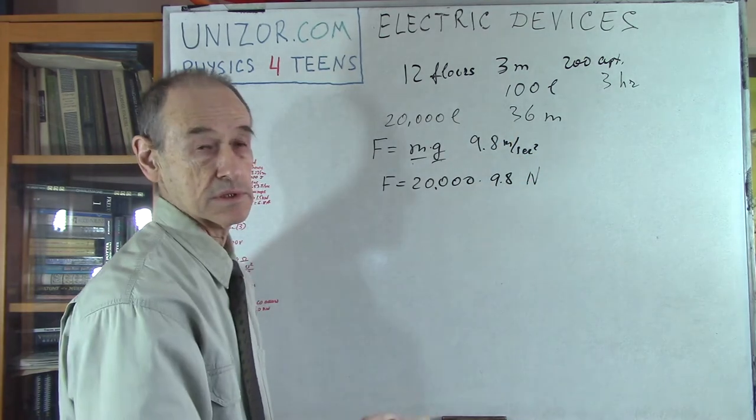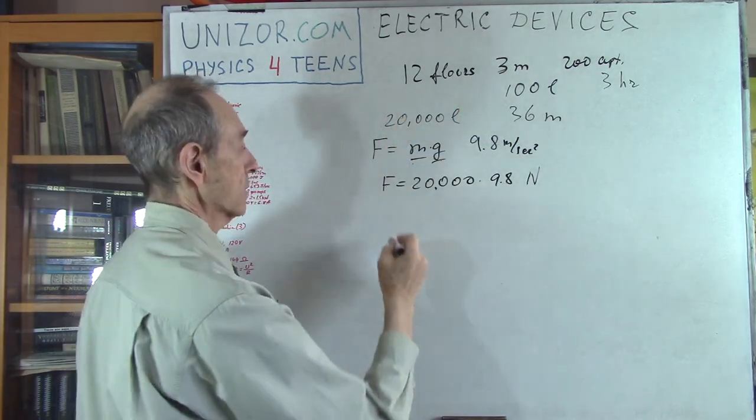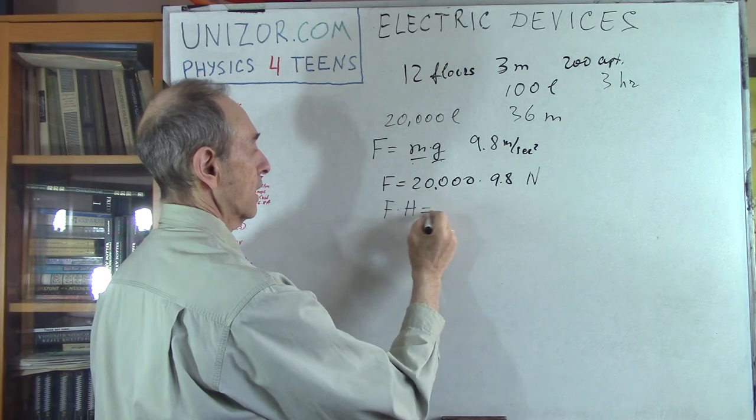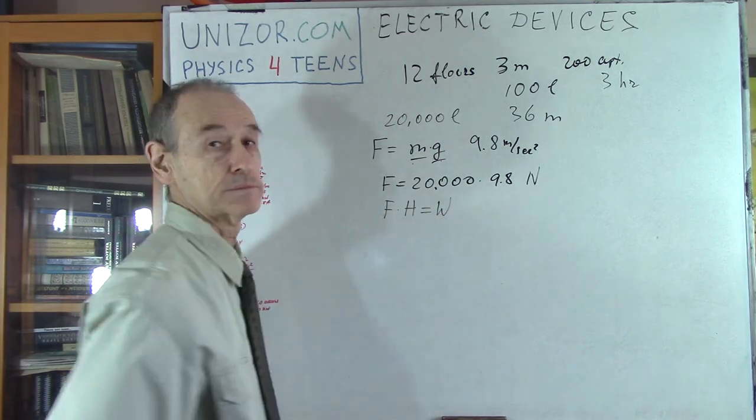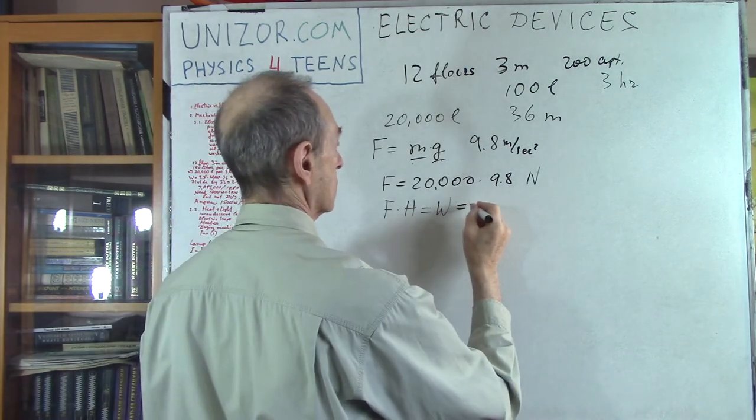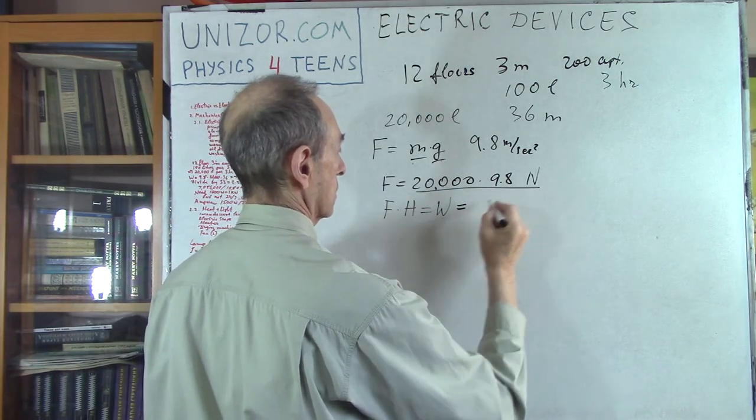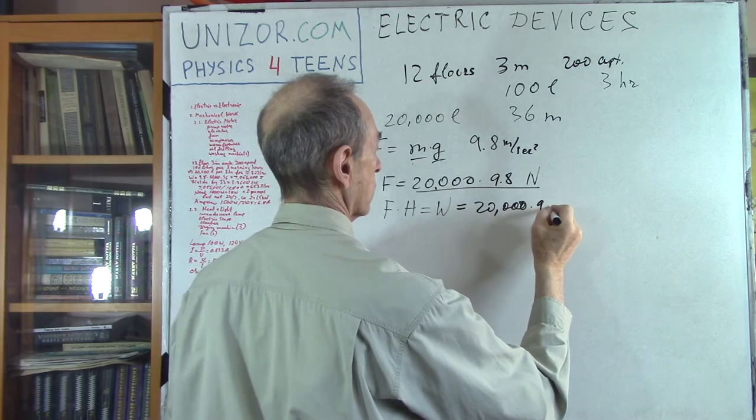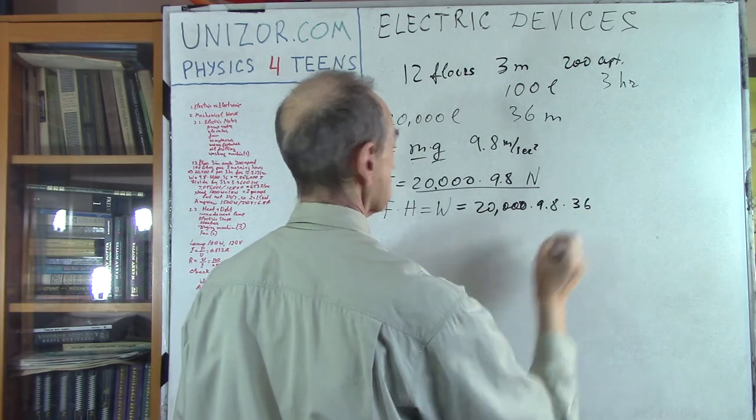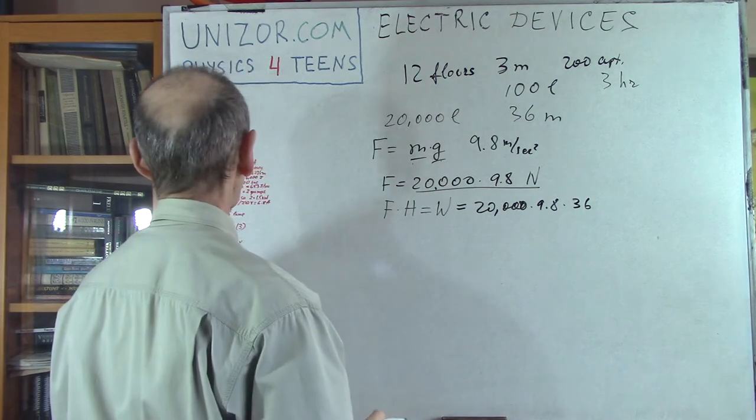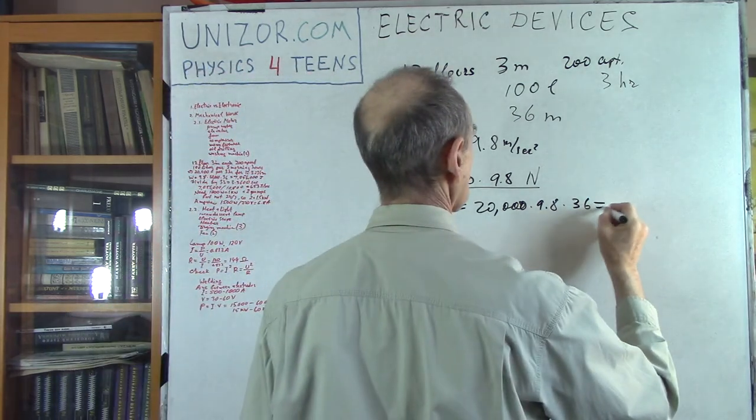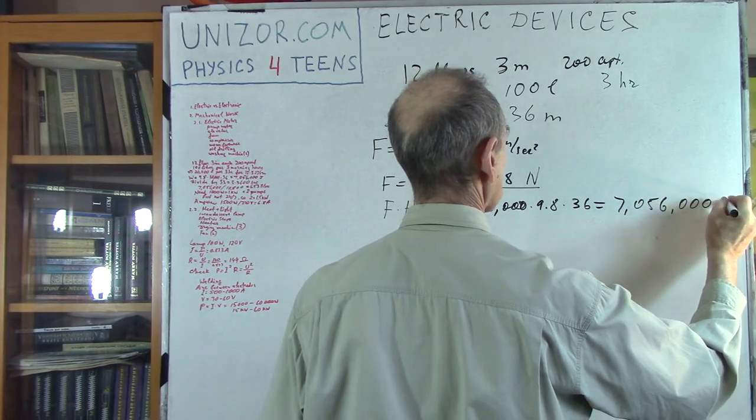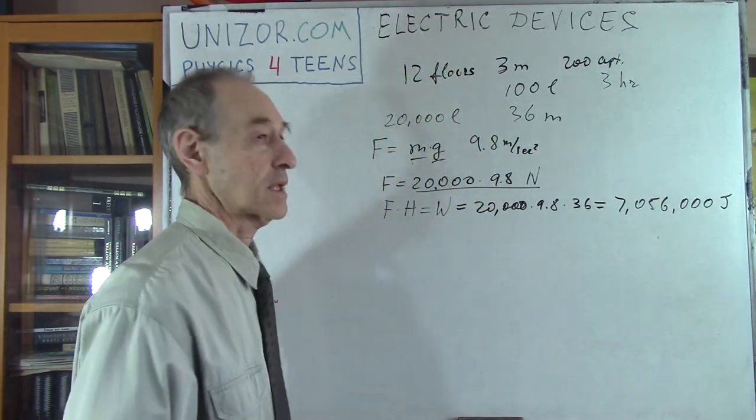So I have the force and I have the distance, 36 meters I have to lift. So if I will multiply F times height, I will have work, which is equal to 20,000 times 9.8 times 36 meters. And this is equal to 7,056,000 joules. That's amount of work.